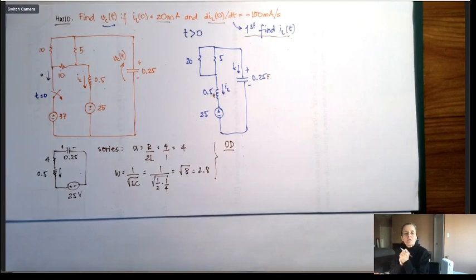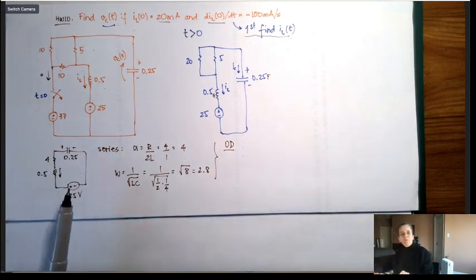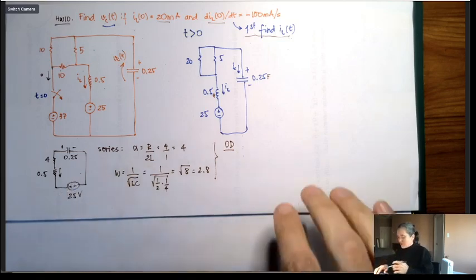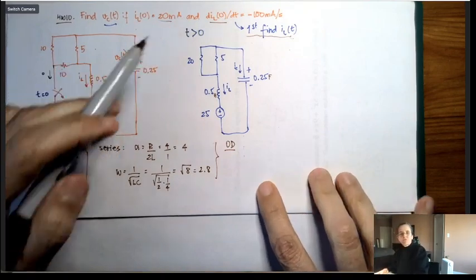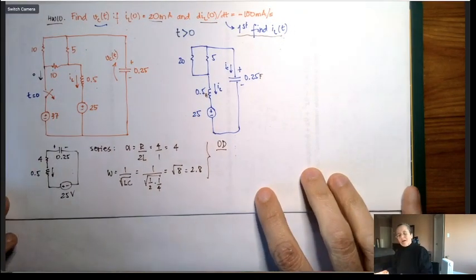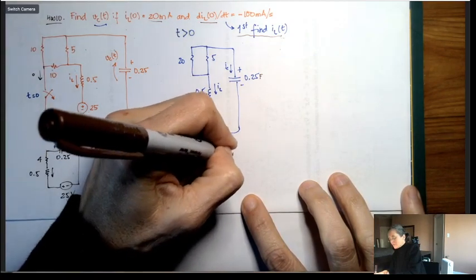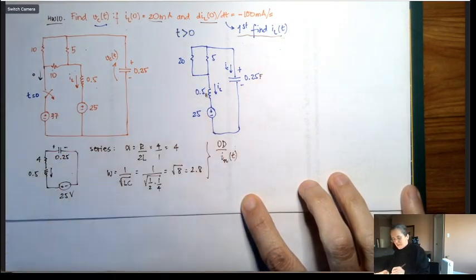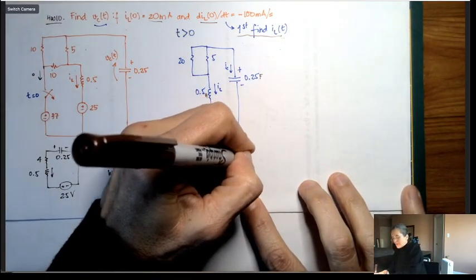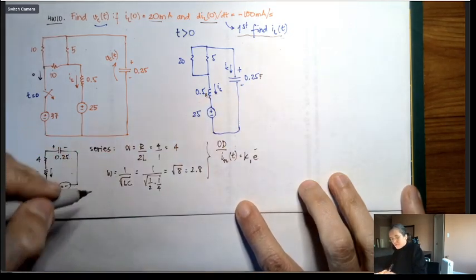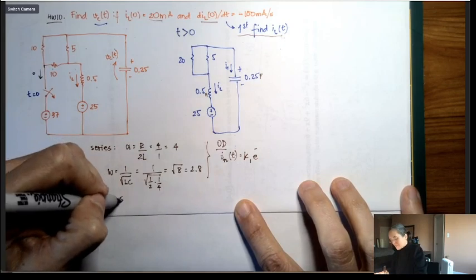The natural solution to the circuit — even if the 25-volt source were zero — would give us most of the answer; we just need initial conditions to complete it. The natural solution for the inductor current IL will be of the form k1·e^(−s1·t) + k2·e^(−s2·t). But I need to find s1 and s2 first.